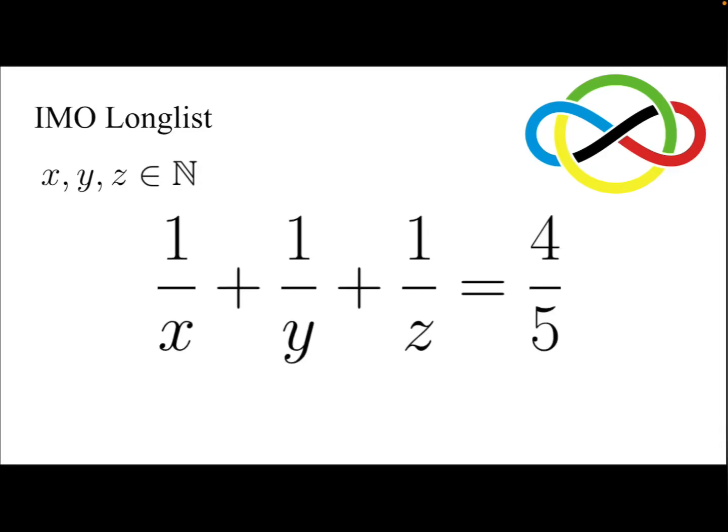In this video, we are going to solve an equation taken from the IMO longlist 1985. For positive integers x, y, and z, 1 over x plus 1 over y plus 1 over z equals 4 over 5.